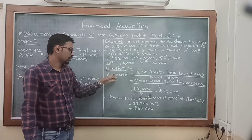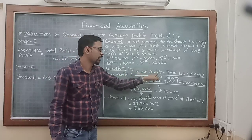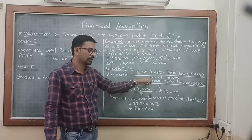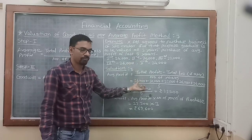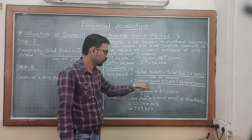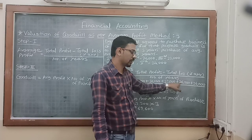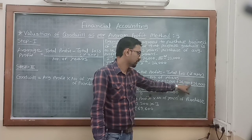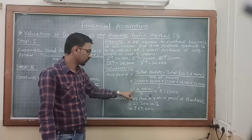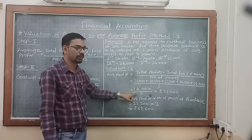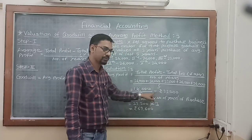We have to calculate the average profit. The formula is total profit minus total loss, if any, divided by number of years. Putting in the values: 24,000 plus 20,000 plus 22,000 plus 26,000 plus 24,000, divided by 5 years. The total comes to 1,16,000 divided by 5, giving us an average profit of 23,200.